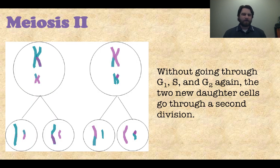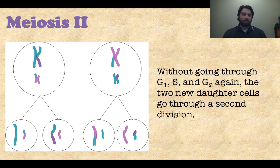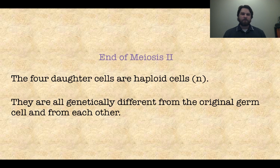I'm not going to go through all the phases of meiosis II since you already know prophase, metaphase, anaphase, and telophase. The key point shown in this diagram is that the two daughter cells from meiosis I do not undergo a growth phase or DNA replication phase — they go right to the second division. You can see that the sister chromatids are pulled apart, and now we have four daughter cells total that bear no resemblance to the original parent cell from the start of meiosis I. At the end of meiosis II, we have four daughter cells that are haploid and all genetically different from the original germ cell.